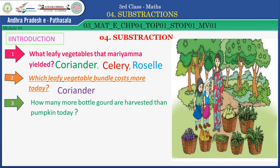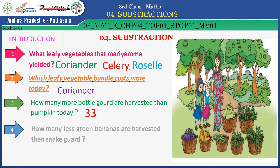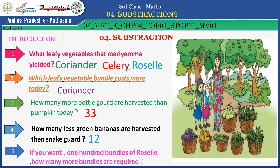How many more bottle gourds are harvested than pumpkin today? Yes, the answer is 33. How many less green bananas are harvested than snake guard? Yes, the answer is 12. If you want 100 bundles of rosalie, how many more bundles are required? Yes, the answer is 30.